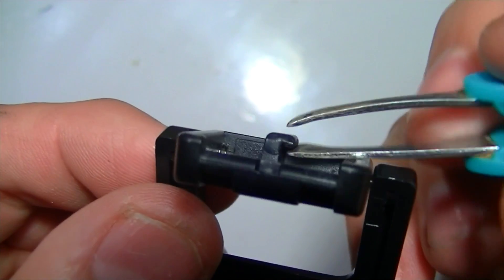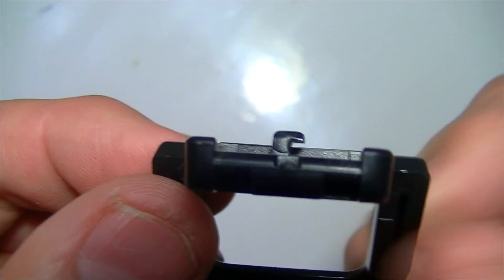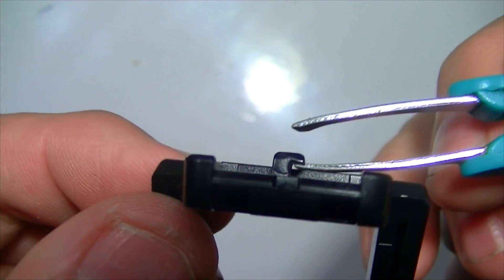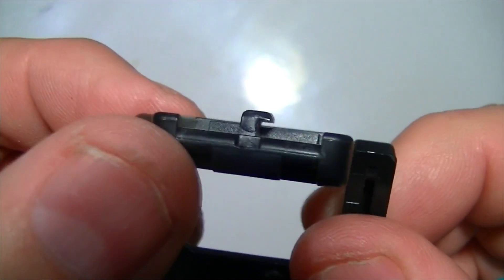You need tweezers and reading glasses and patience. But you just use a small dab of the ABS cement to put the tab back on. And when it